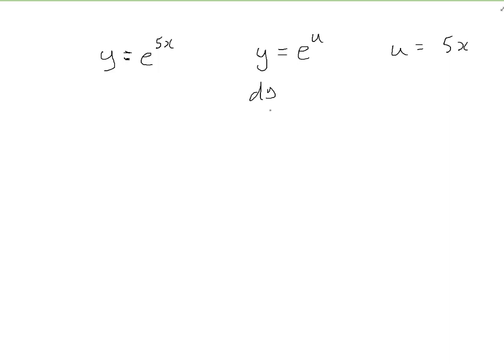So, differentiate each part, so dy/du. This is the simplest thing we need to learn on the course, nothing happens. du/dx is 5. This is almost as simple. And then we can combine it. So dy/dx, it's this times this. So it's e^u times 5. The dot just means times sometimes for clarity. So it's 5e^u. Then we have to remember that u is 5x. So it's 5 times e^(5x). That's dy/dx.